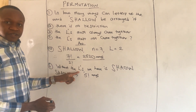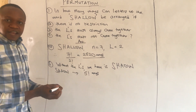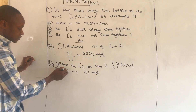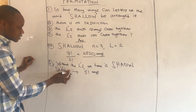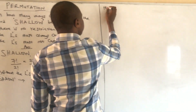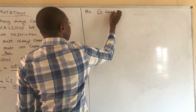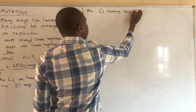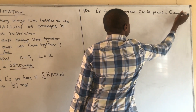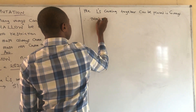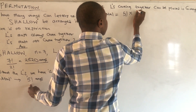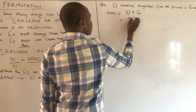We have the condition attached to the L's. Since the L's will always come together, they stand as one. So the L's can be placed in six different positions within the five remaining letters. The L's coming together can be placed in six ways, so the total is five factorial times six. This gives us six factorial, which is 720 ways.